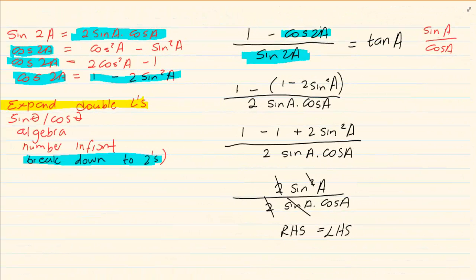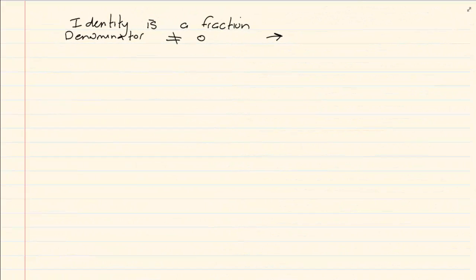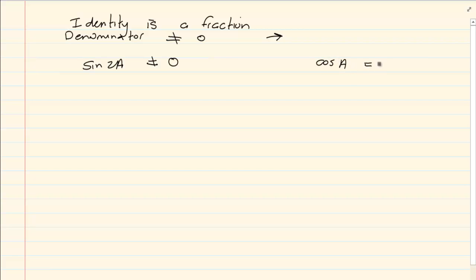Now let's take the following identity — we had done this identity before. In this video we discussed how (1 minus cos2a) over sin2a is equal to tan(a). Now what would the restriction be? The restriction would be that sin2a may not equal zero, but also since tan is sin over cos, cos(a) may also not equal zero. So we have two restrictions: sin2a ≠ 0 and cos(a) ≠ 0.